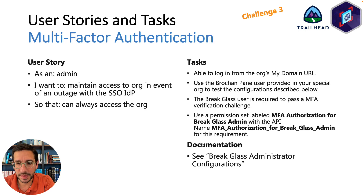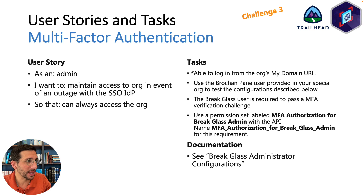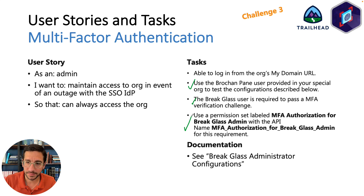Challenge Three is about Multi-Factor Authentication. As an admin, you want to maintain access to the org in the event of an outage with the SSO identity provider. The tasks are: be able to log in from the My Domain URL; use the Brochan Pain user in your special org to test the configurations; the Break Glass user is required to pass an MFA verification challenge, so you actually have to do that; and create the user permission set labeled 'MFA Authorization for Break Glass Admin' with that API name. Once you get that all set up, you're ready to pass Challenge Three.